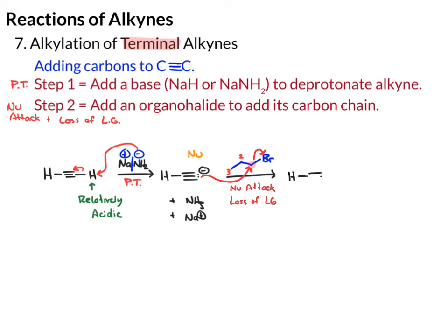So now I'm going to draw my alkyne, drawing the new bond in red. That's attached to carbon one, then we have carbon two, carbon three. The leaving group is the bromide. It's really easy to lose carbons in this process, so I always encourage you to count your carbons up. We should have two carbons from the alkyne plus three carbons from the organohalide, which means you should end up with five carbons in the product. And we have one, two, three, four, five carbons in the product — we're in good shape.